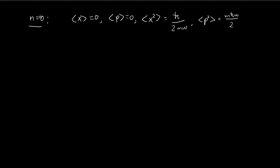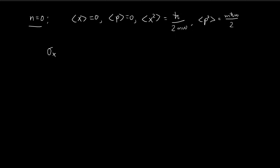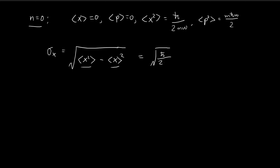For n equal to 0, the ground stationary state, these are the expected values that we found in the previous few videos, and we're going to use these to find the standard deviation of x and p. The standard deviation of x, by definition, is equal to the square root of the expected value of x squared minus the expected value of x, squared. This term is equal to 0, and then this term is equal to h-bar divided by 2m omega.